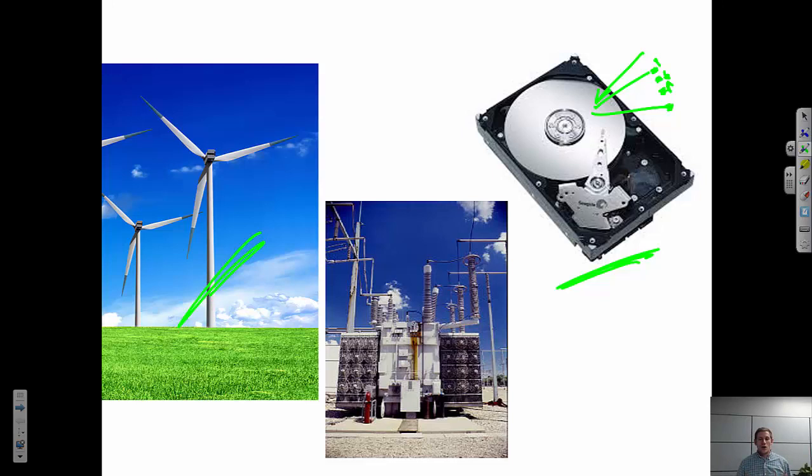And so those bits are telling us how to store the information on the hard drive. Let's think about a transformer. Anytime I'm changing voltage from a high voltage to a low voltage, I do this typically through the use of a solid state transformer.